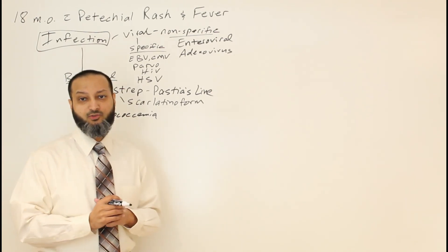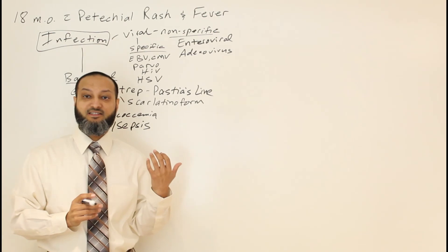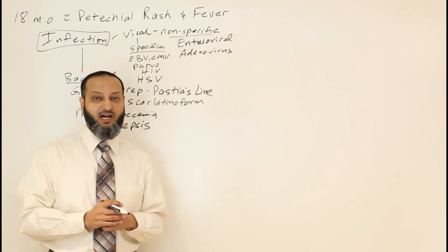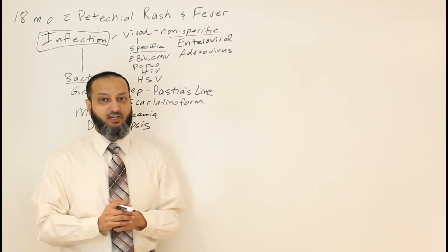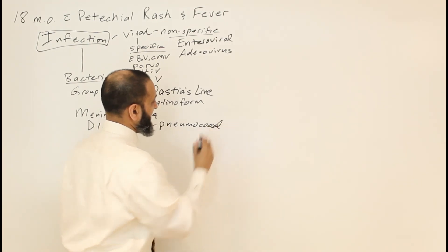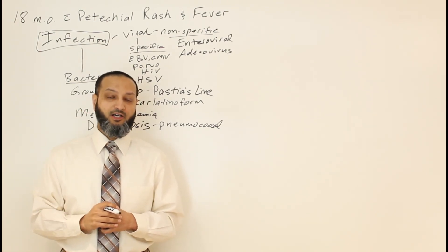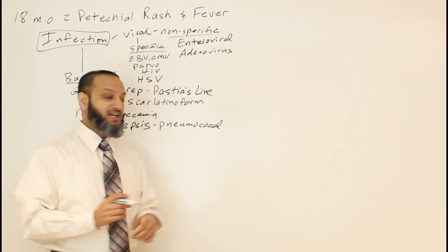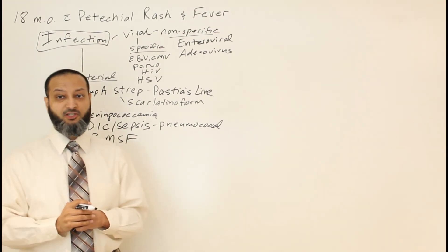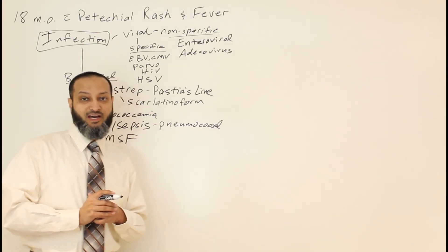Other bacterial infections to consider: meningococcemia can lead to DIC and sepsis, but other organisms can cause DIC and sepsis as well. Pneumococcal infections can do that — pneumococcal sepsis. We have conjugated pneumococcal vaccines, but there are so many serotypes not covered that you can still get DIC and sepsis. And especially in this patient with travel to North Carolina, Rocky Mountain spotted fever is another entity that can present with petechial rash and fever — it's endemic on the East Coast in the North Carolina area.